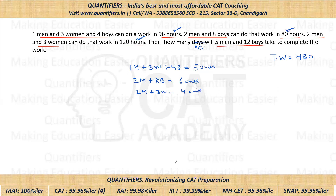Now we have three equations and three variables, and we can find the individual values. If you look carefully, we can find all individual values quite quickly. Two men and eight boys are doing 6 units. In the first equation, one man and four boys are exactly half of two men and eight boys — so one man and four boys will be doing 3 units.